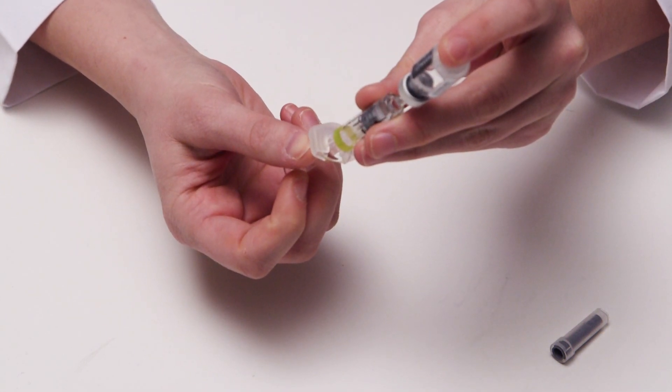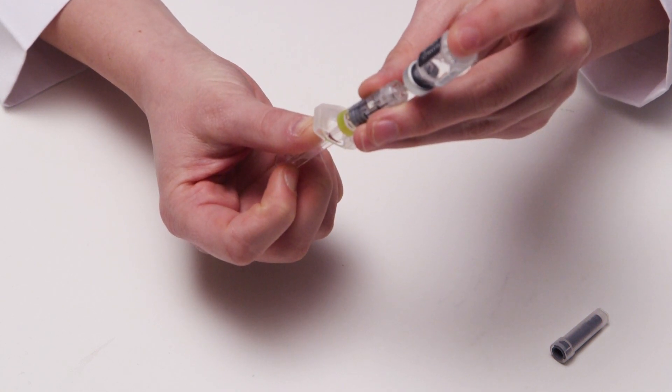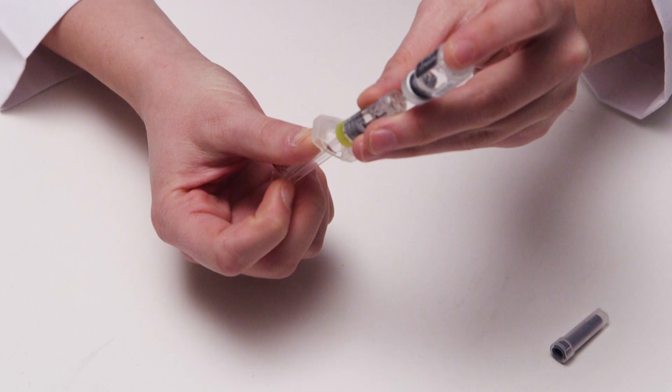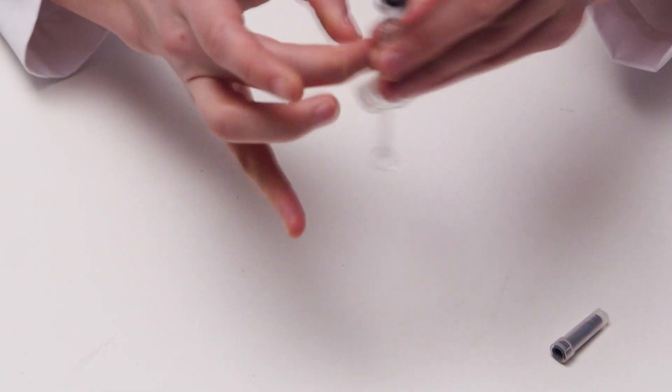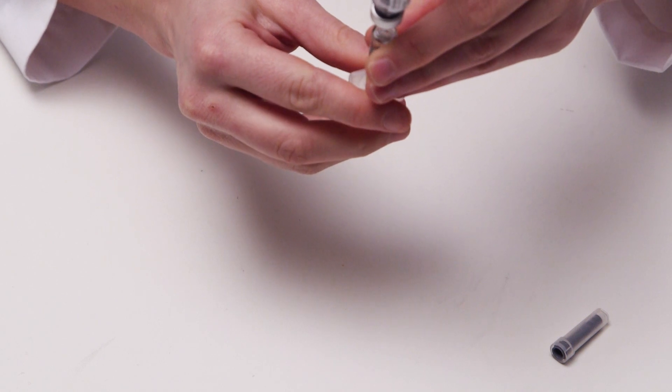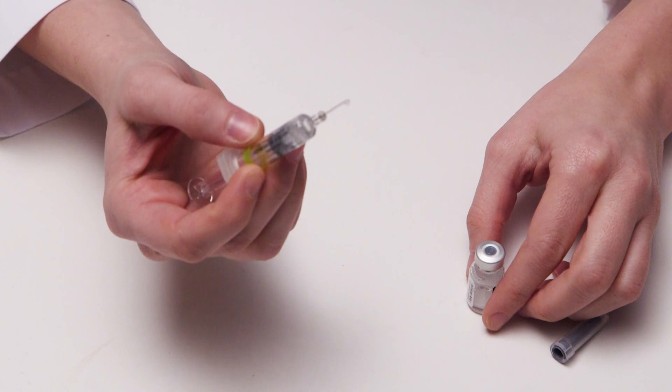Draw up the mixture into the syringe. Once the syringe is full, remove the vial and make sure you remove any bubbles from the syringe. Now, the injection is ready.